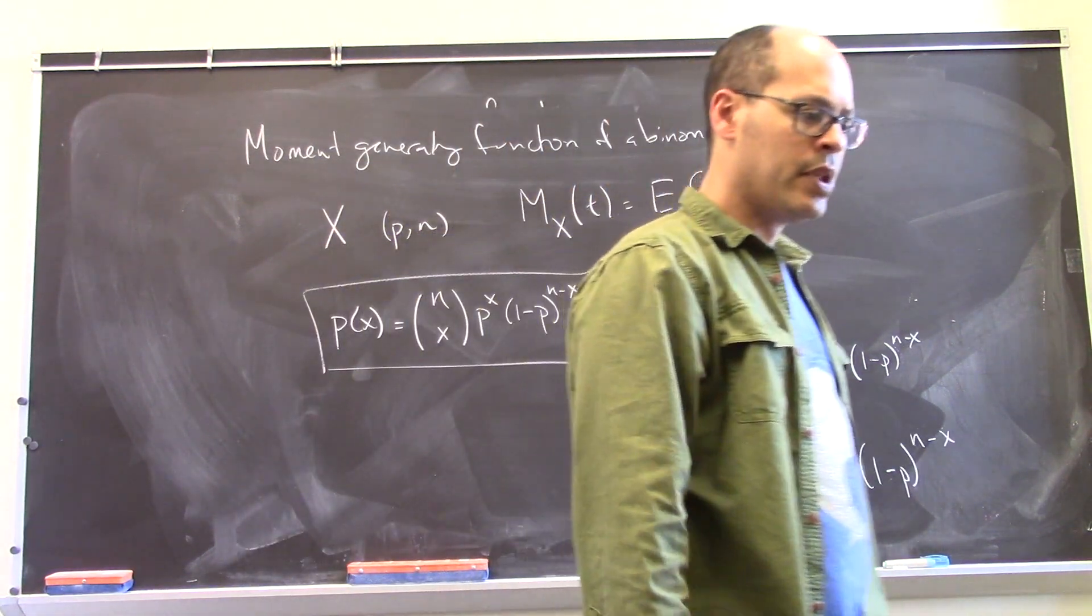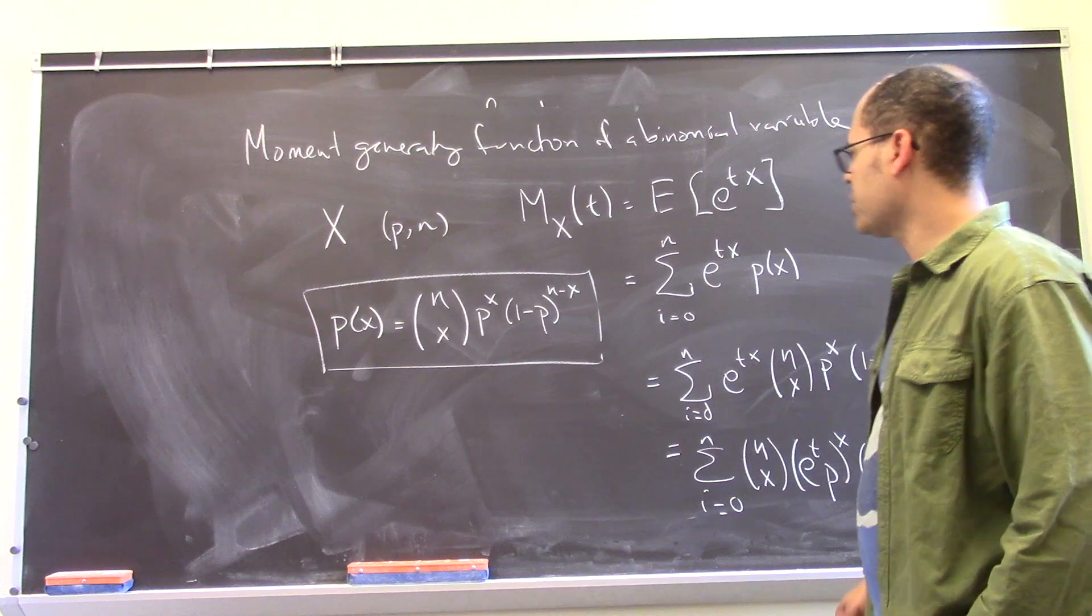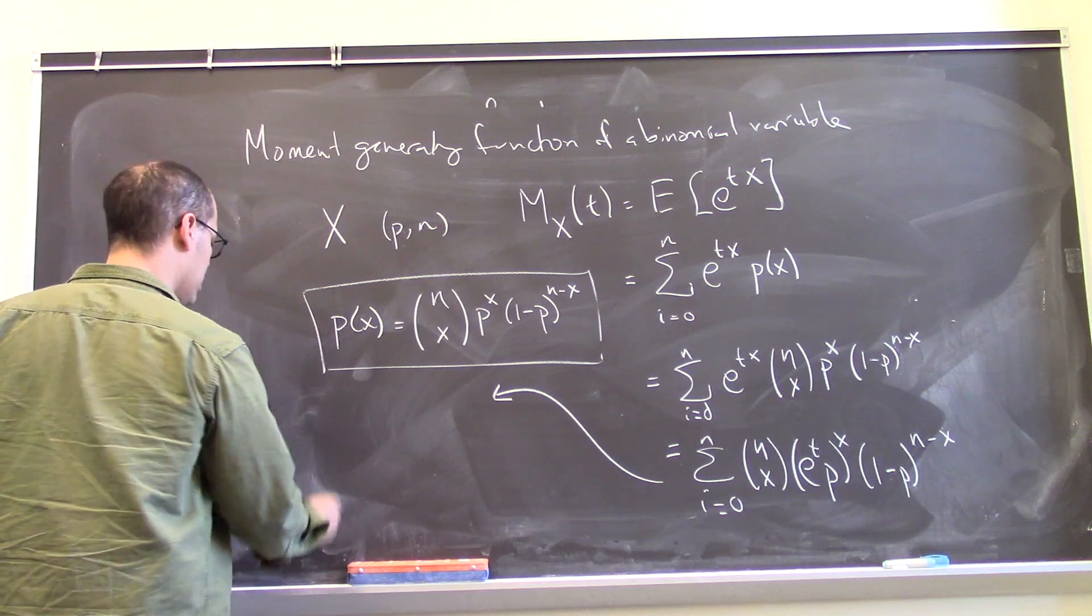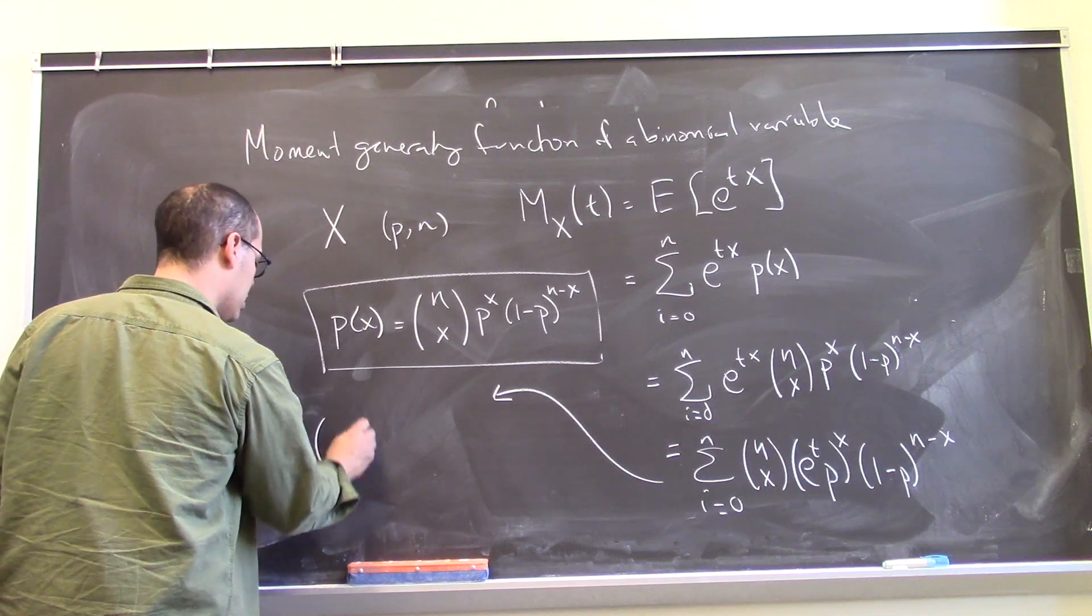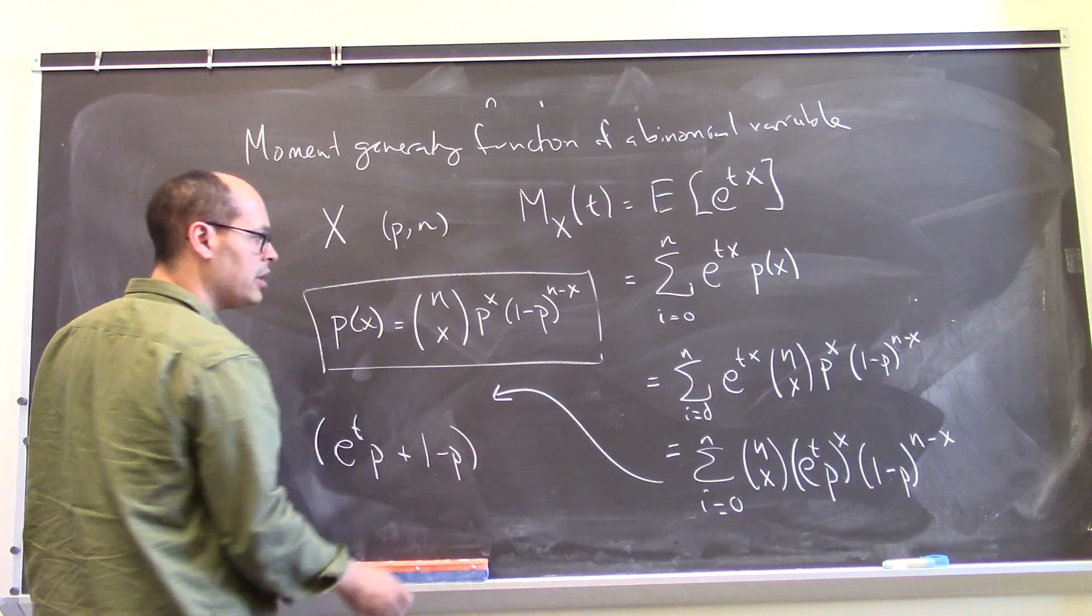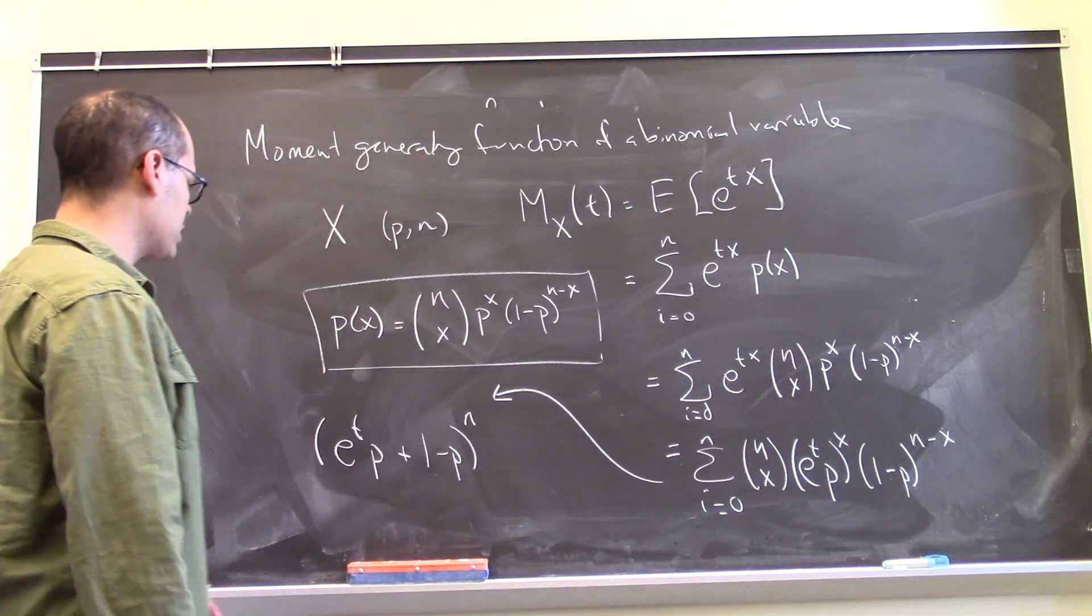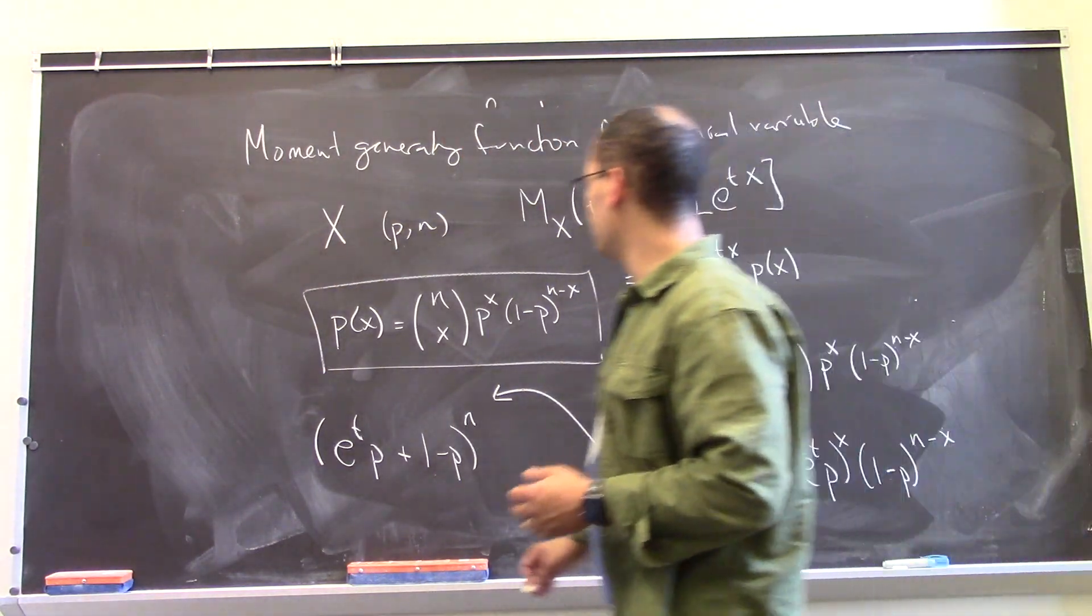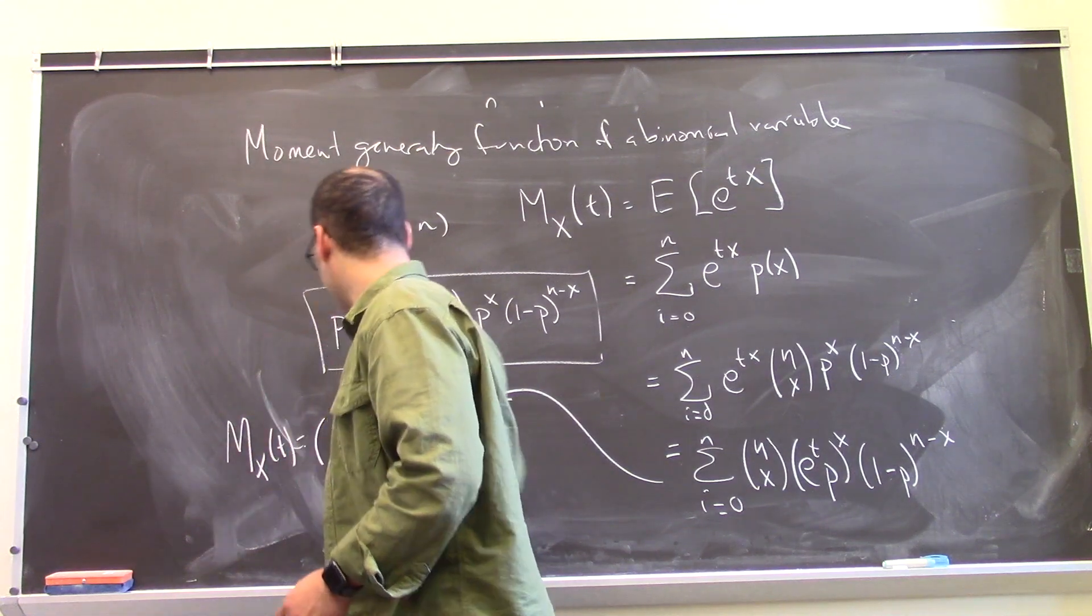And lo and behold, what this thing actually looks like is a binomial expression. Right? So this is what happens if I were to take e to the t times p plus 1 minus p and raise it to the power n. Right? When you FOIL it out, this is exactly what it looks like. So this is the moment generating function.